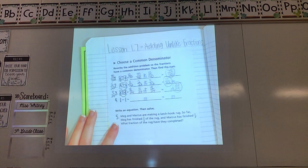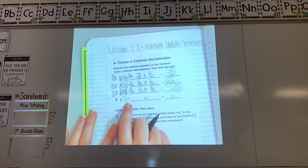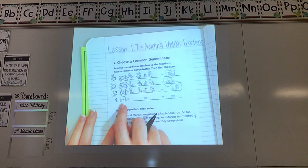Nice. We got one more up here. Let's give it a try. 3 eighths plus 2 fifths. Looking at my bottom numbers. Are they the same? Nope. So how do I fix it?